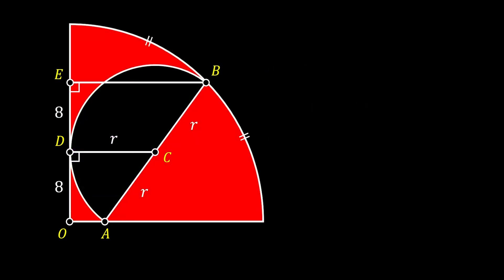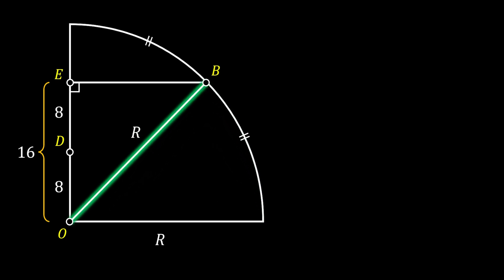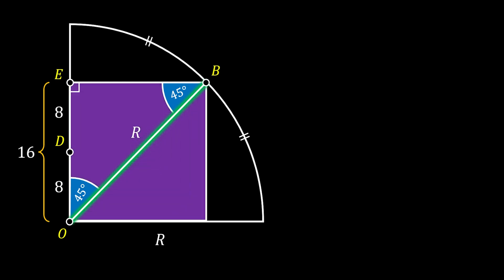With this new knowledge, going back to our previous sketch, we can conclude that line OE must be equal to 16. We label the radius of our big quarter circle as capital R. Rotating this radius to point B, we form the right triangle OEB. Since point B is the midpoint of the arc of our quarter circle, radius OB divides the central angle into two identical angles of 45 degrees. This means the angle at point B of this right triangle must also be 45 degrees, making this triangle an isosceles right triangle — representing half of a square with side 16.